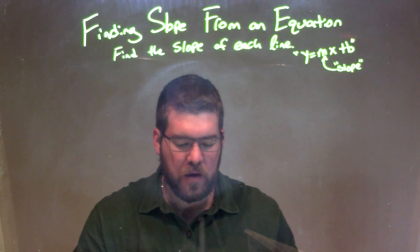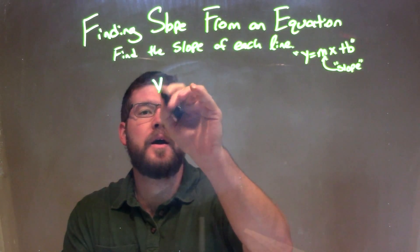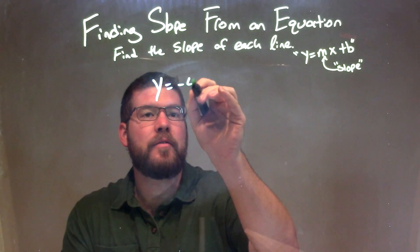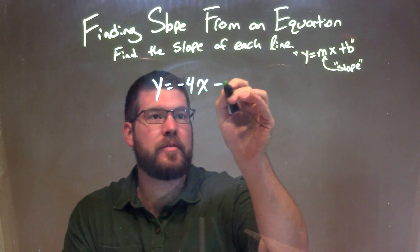We're going to find the slope of each line. So if I was given this equation, y equals negative 4x minus 1.